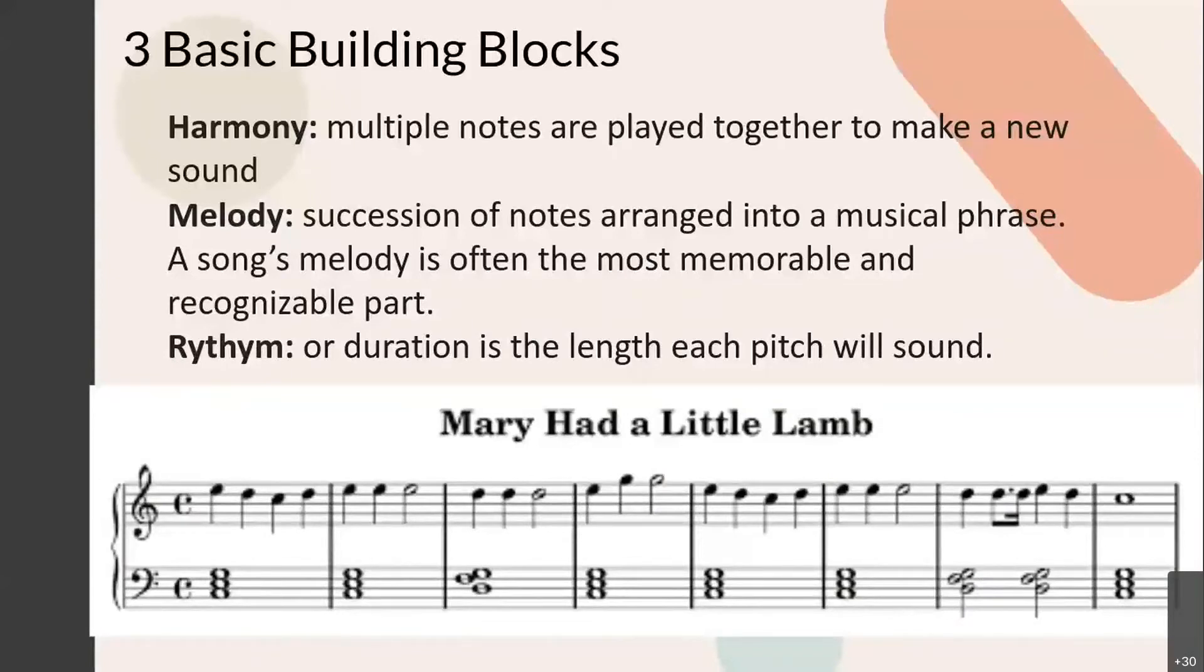The part that you remember of Mary Had a Little Lamb is the melody. So the Mary had a little lamb, little lamb, little lamb. That's the melody. That's the part that you remember. The rhythm is the duration of each length of pitch. So those are the notes, the beats per minute. So you have Mary Had a Little Lamb. Each of those claps is the rhythm.